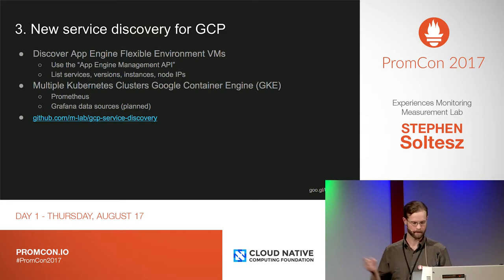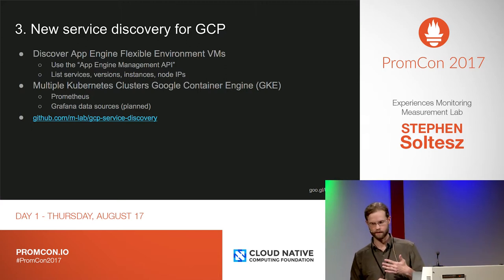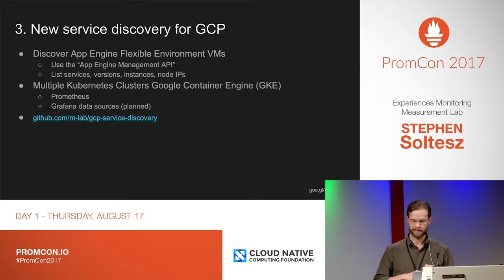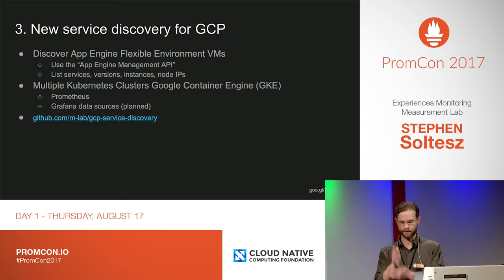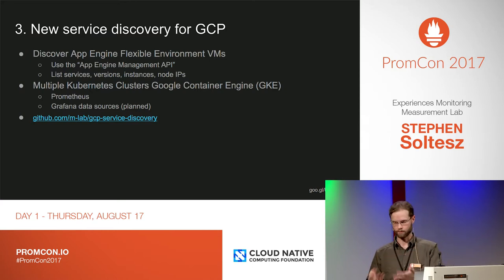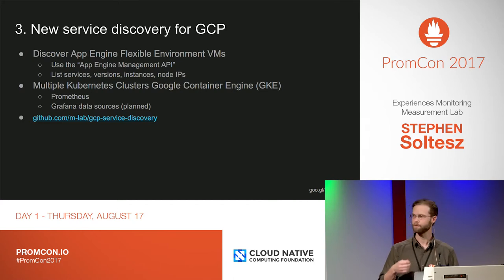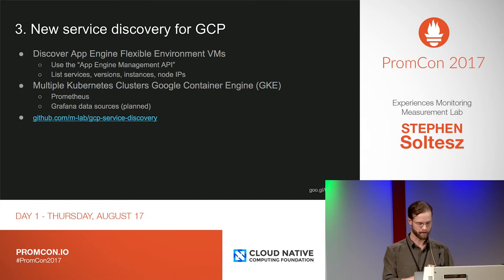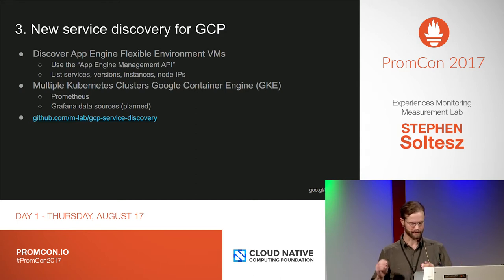New service discovery for GCP. One of our new services is an App Engine flexible environment service. By design, App Engine does not expect clients to need to address individual instances, so we can't use the front door. And even though Flex VMs are GCE instances under the surface, the GCE API does not list or return Flex VMs, so the GCE service discovery in Prometheus doesn't help us here. Fortunately, the App Engine Management API does make it possible to list all of the nodes and instances associated with a given App Engine service and version. So if you set up the GCP service discovery as a companion to Prometheus, every instance can be discovered and scraped.